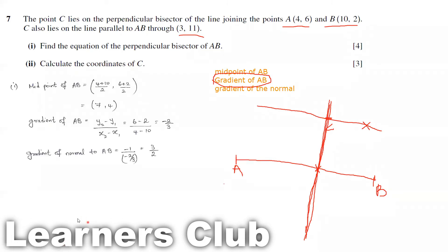To find the midpoint, we take the x-coordinate of A summed with the x-coordinate of B: 10 plus 4 is 14, divided by 2 gives x-coordinate 7. For the y-coordinate: 6 plus 2 is 8, divided by 2 is 4. So the midpoint has coordinates 7 comma 4.